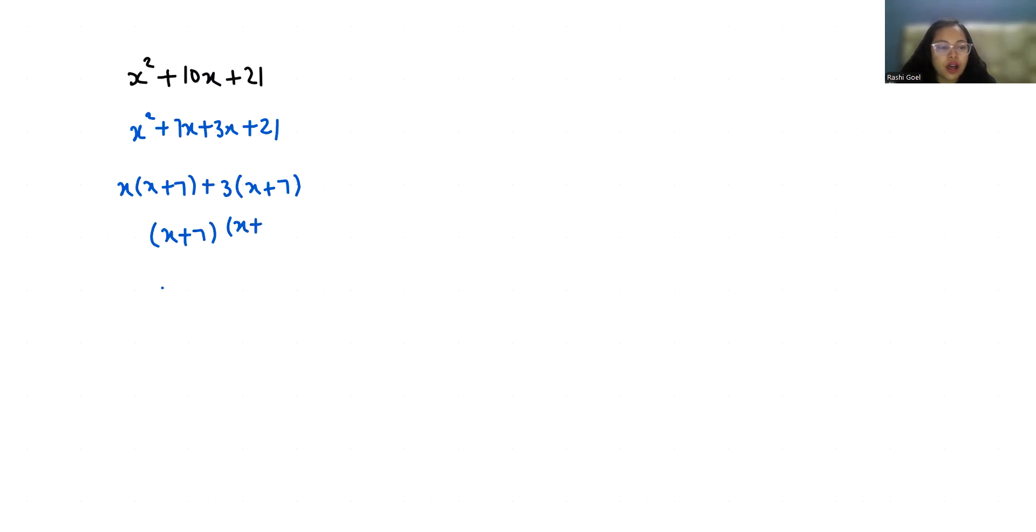So solutions are, put them equal to 0. First, x + 7 = 0, so x = -7. And if x + 3 = 0, x = -3. These are the two solutions.